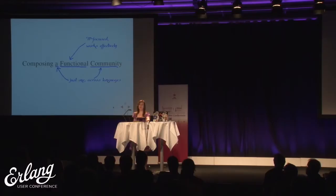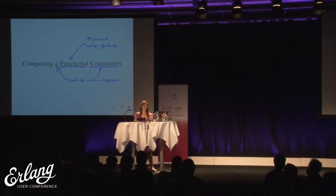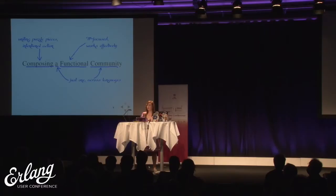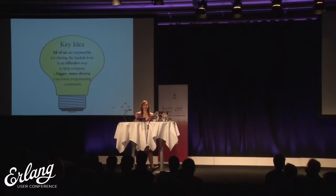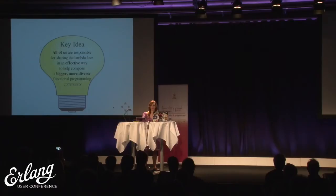This community I'm talking about building is a functional one - functional in that it embraces functional programming, but also one that works, one that operates well. And this functional community is something we want to compose. Composing is function composition - building up results from smaller puzzle pieces. You need all those different pieces to get the desired result. Composition is also a deliberate act; it doesn't just happen without any thought. The key idea of this talk is that all of us are responsible for sharing the Lambda love in an effective way to help compose a bigger, more diverse, functional programming community.